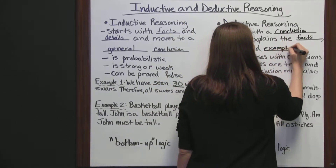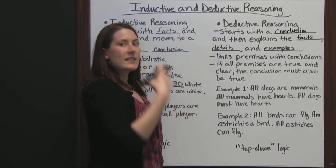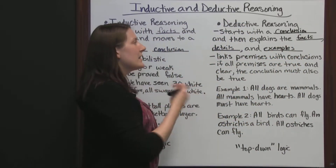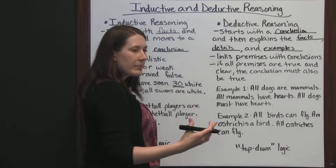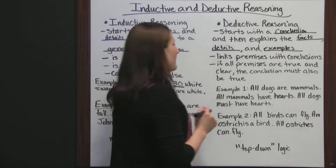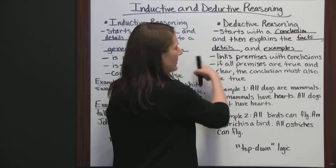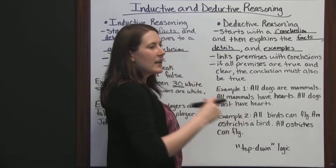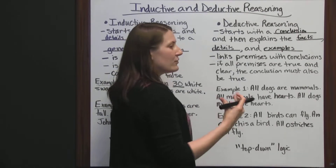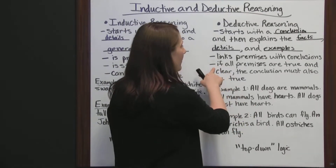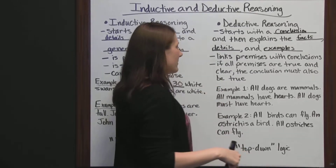You start with one basic conclusion, one basic statement, and then give facts and details that can support it or that are examples of that statement. This one links premises with conclusions. You come up with a certain premise and it's linked to your conclusion that you started with. If all premises are true and clear, then the conclusion must also be true.